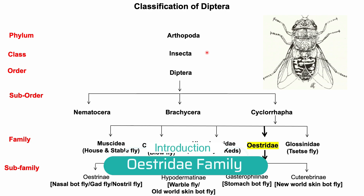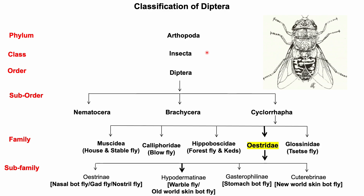This is the classification of different flies. We studied different important veterinary arthropods under the suborder Nematocera, Brachycera, and Cyclorrhapha. You can see different important families under the suborder Cyclorrhapha. Flies under the Oestridae family are commonly known as nasal botfly, warble fly, stomach botfly, or skin botfly.